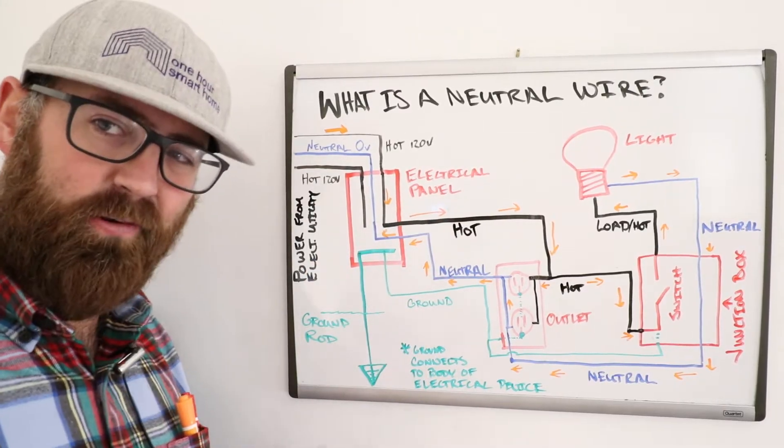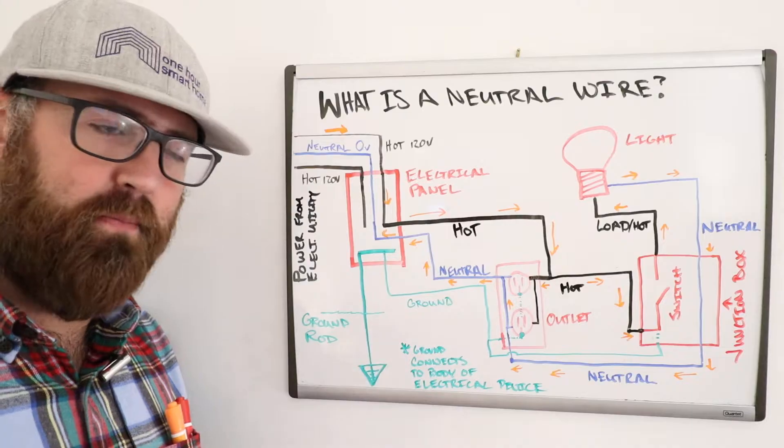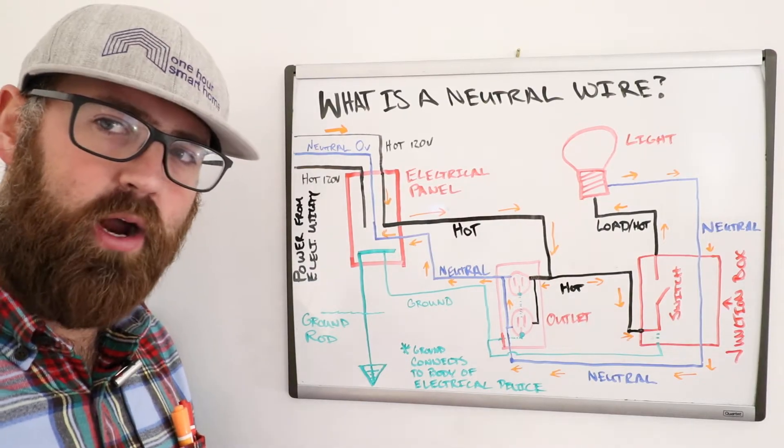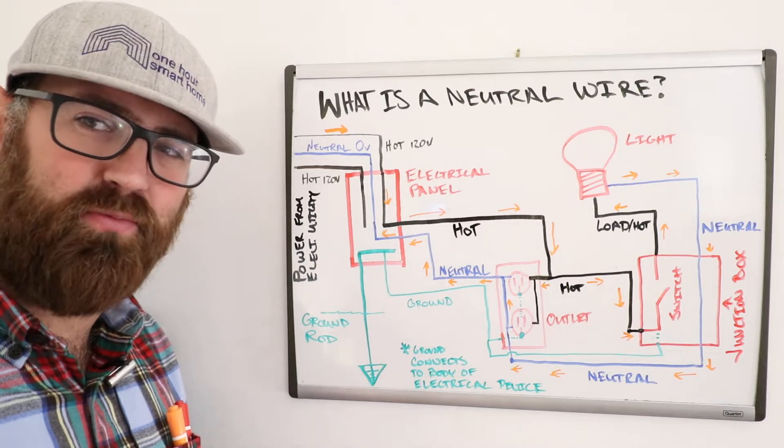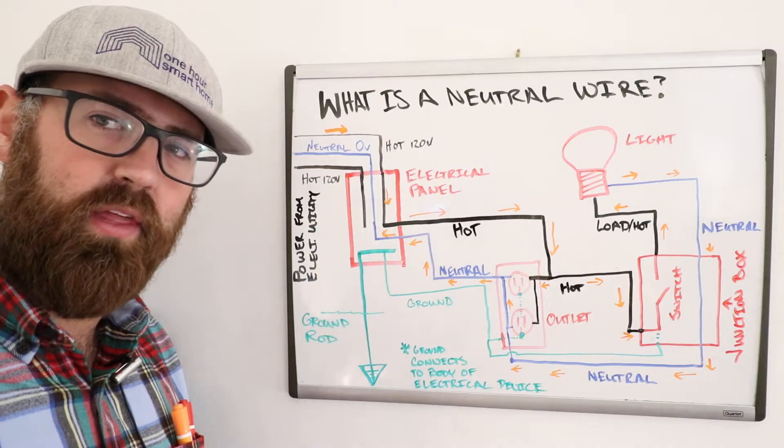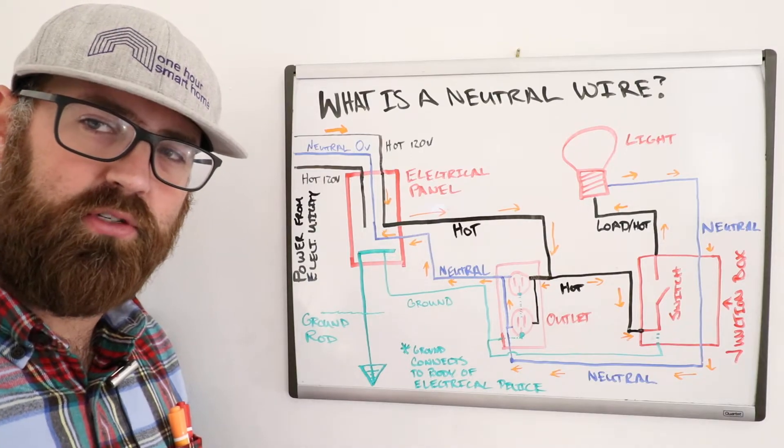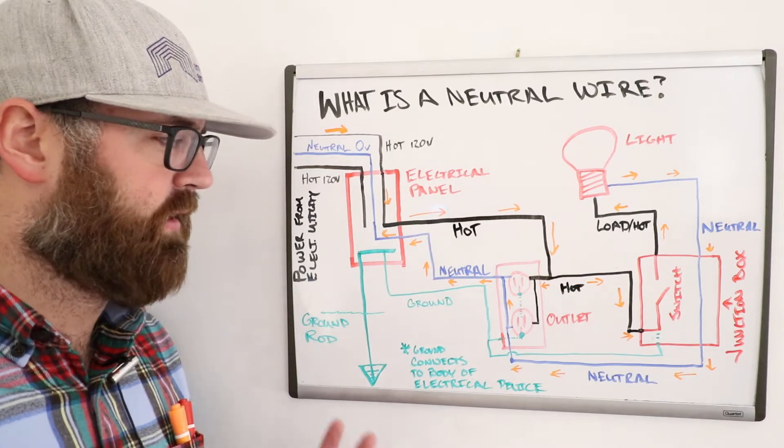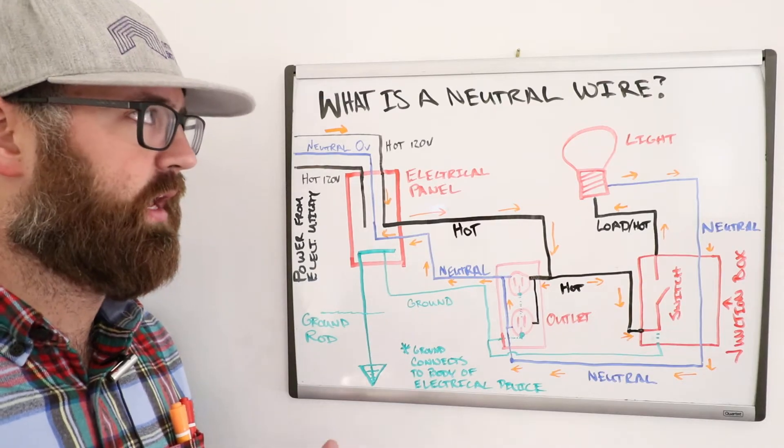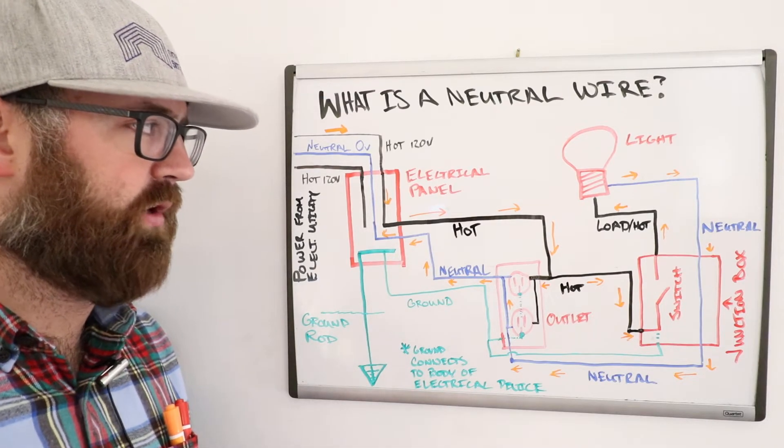A neutral wire is a return path for current. A lot of you might be watching this because you don't have a neutral wire in your switch box and you want to add smart switches. If that's the case, click on one of the other videos below that explains how you can install smart switches without a neutral wire. However, this is just going to be explaining electrical systems and what a neutral wire is and what a neutral wire does.